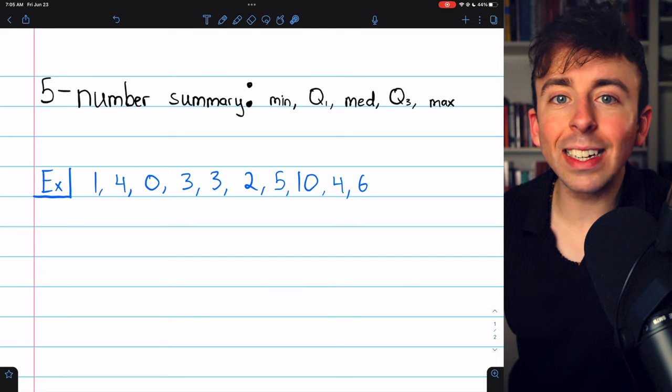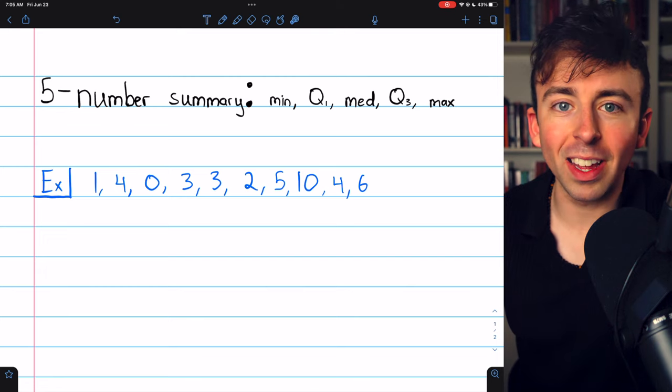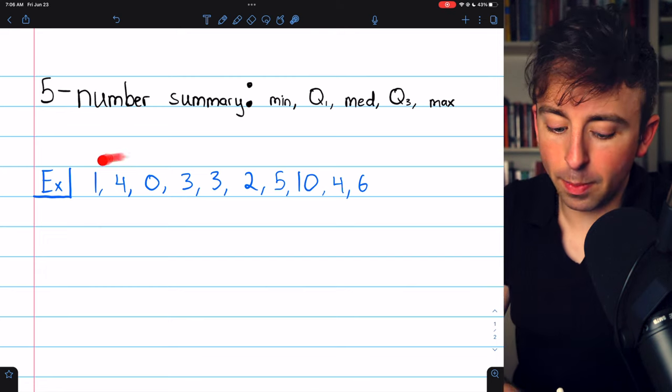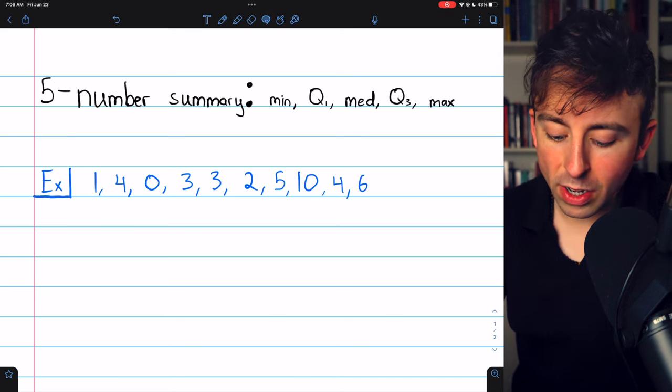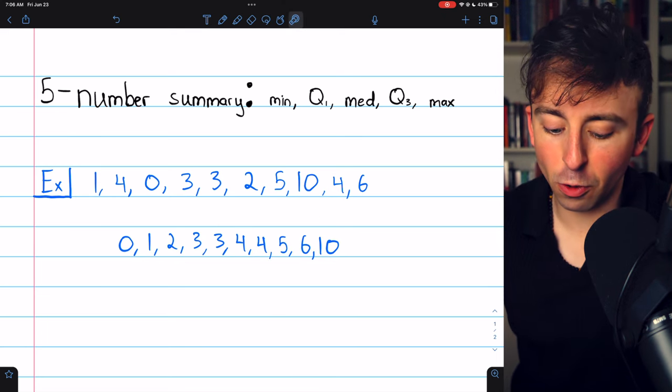With the five-number summary, you can then construct a box plot to represent the data set. To find the five-number summary of this data set, we should begin by putting it in order from least to greatest.